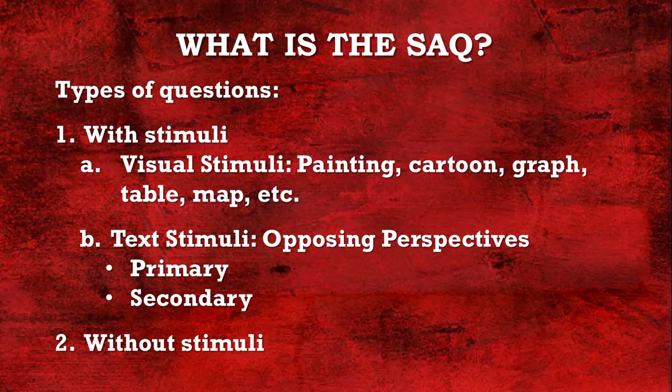And then the second type of short answer question is those without stimuli, where it may just ask you a direct question — for example, explain the cause of the American Revolution, then give another cause, and potentially in Part C, yet another cause of the American Revolution.